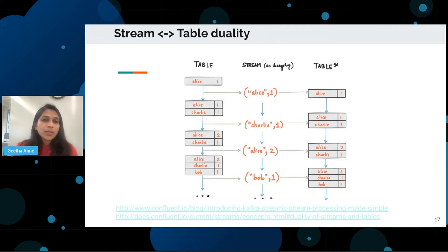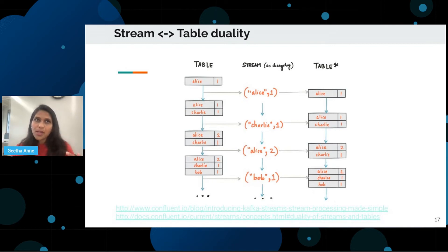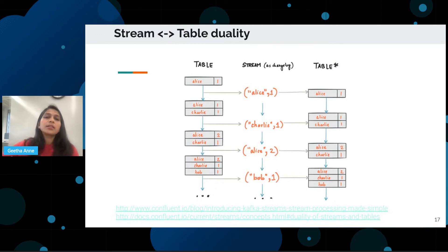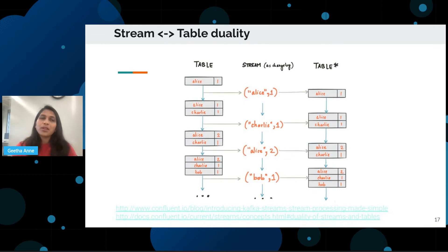A table is a superset of a stream, and any operation you perform on a stream can be performed on a table, but not vice versa. To illustrate: if you imagine a game of chess, when you're making moves, each of the moves is recorded as a stream. The state of each pawn on its particular square — the table stores that data. So streaming data represents changing facts over time, while a table stores a snapshot of a particular state at a particular timestamp.